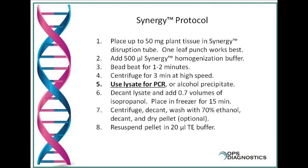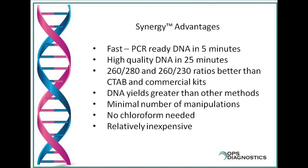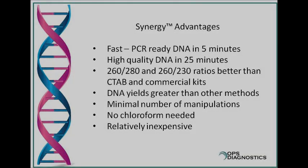In which case there are times when you may have to alcohol precipitate. So taking the lysate and adding 0.7 volumes of isopropanol, popping it in the freezer for 15 minutes and then spinning it down, will yield DNA that is equal in quality to CTAB and many times better than CTAB methods and better than many commercial kits out there.